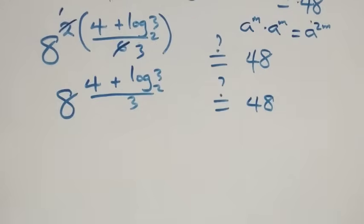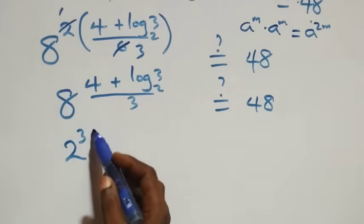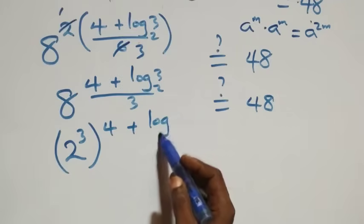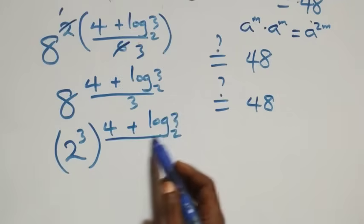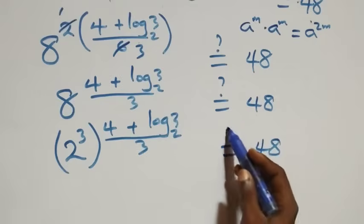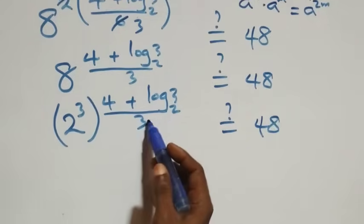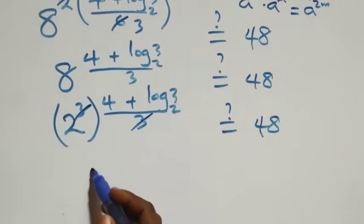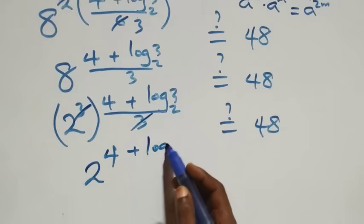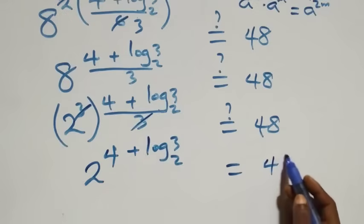We write 8 as 2 raised to power 3, so we have (2³) raised to power (4 + log₂3)/3 equals 48. The powers multiply, and the 3's cancel, giving 2 raised to power (4 + log₂3) equals 48.